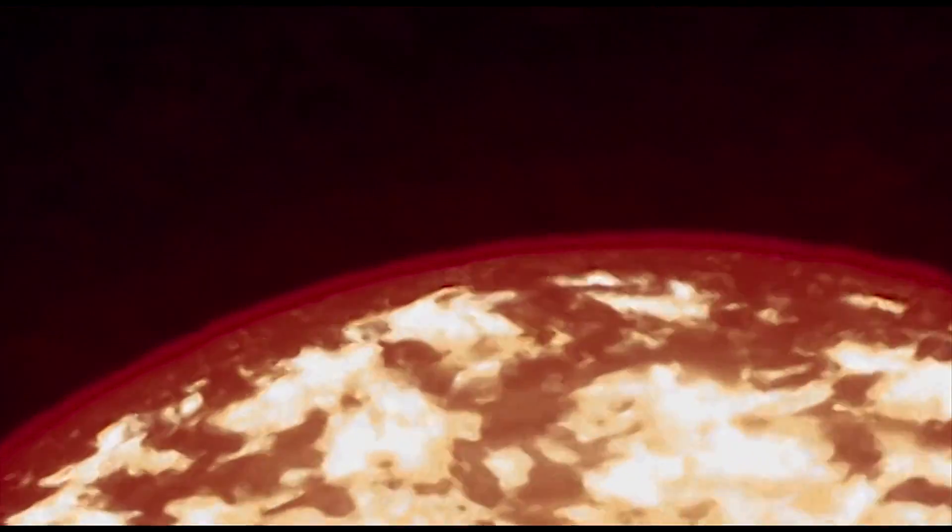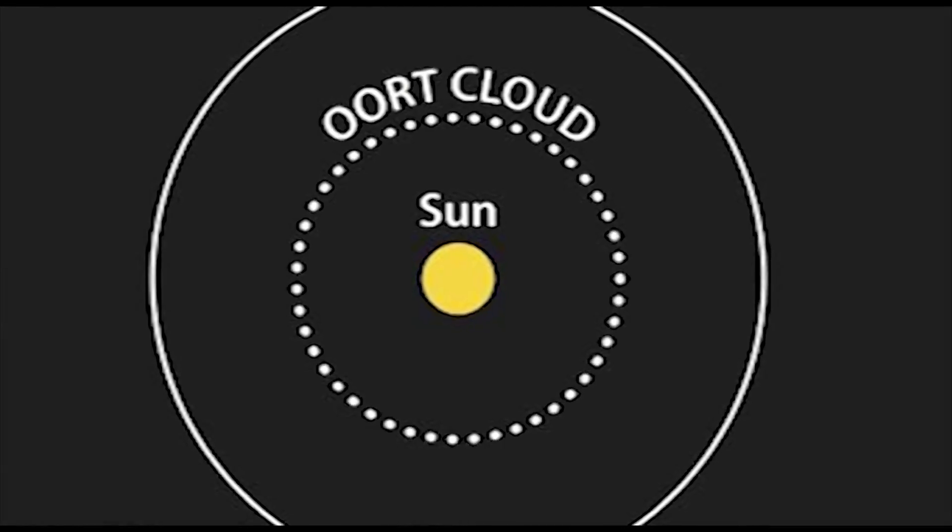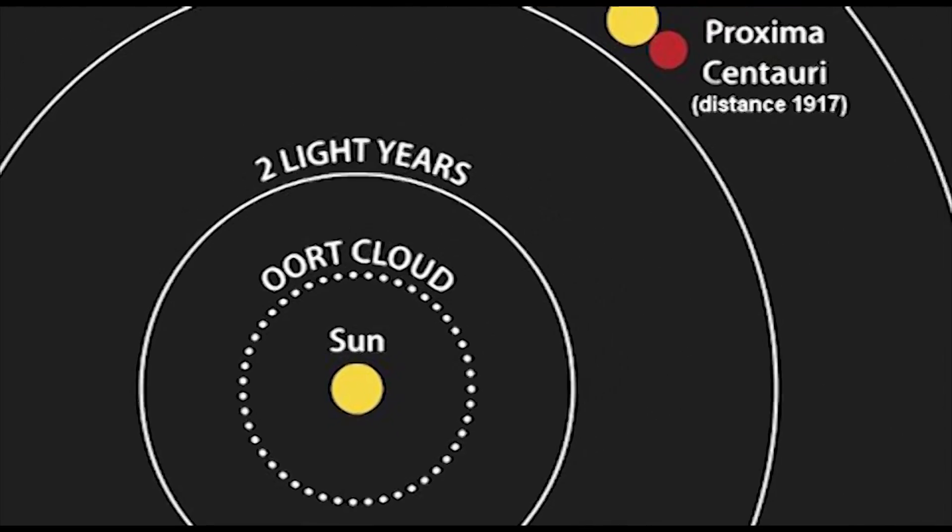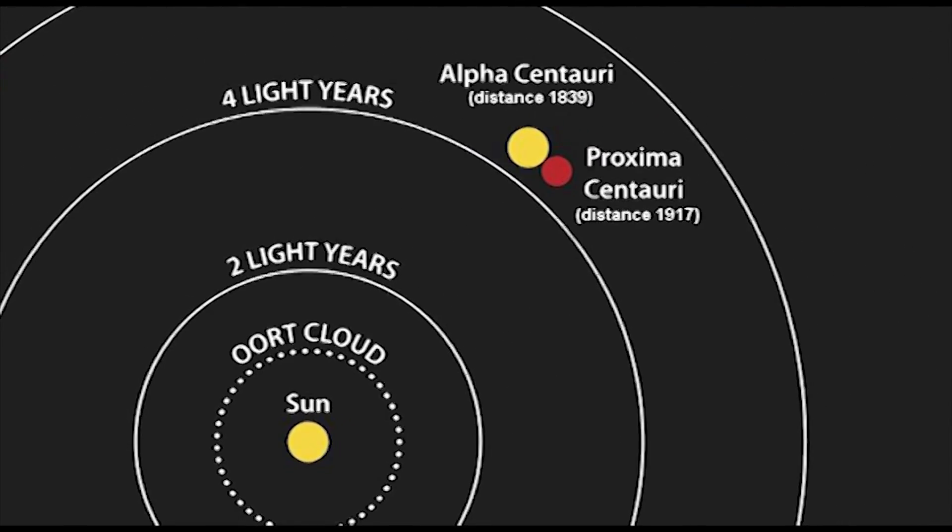Astronomers have discovered that a real shooting star came five times closer than our current nearest neighbor Proxima Centauri. No other star is known to have approached this close to us.